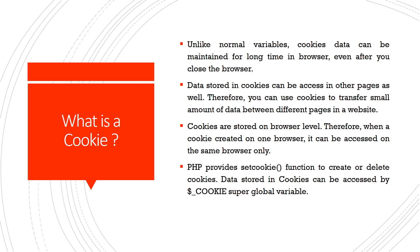What we have searched — that history we can find. So that is stored in the cookie memory, which is stored in the hard disk of a particular system, so it is stored for a very long time. Data stored in cookies can be accessed in other pages as well. Therefore you can use a cookie to transfer small amounts of data between different pages in a website. Cookies are stored on the browser level, so when a cookie is created on one browser, it can be accessed on the same browser only.